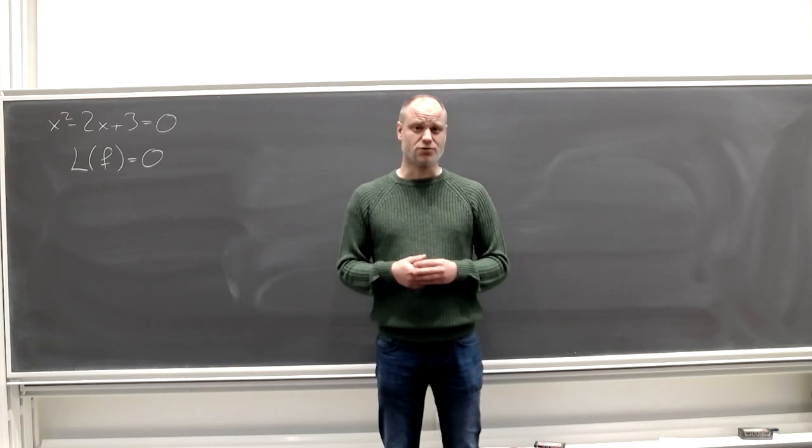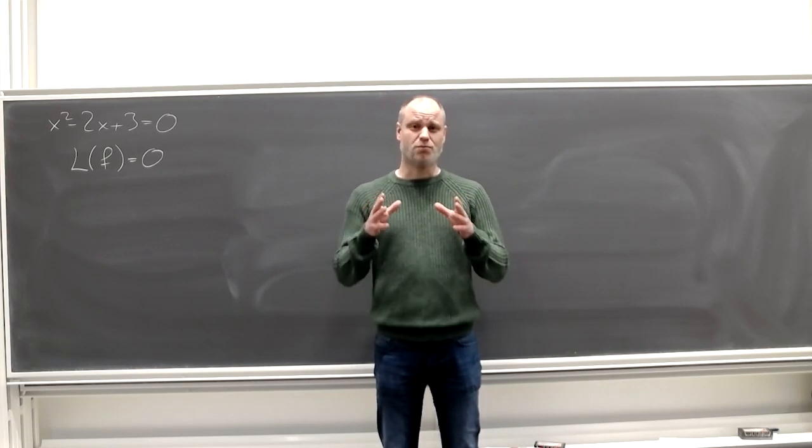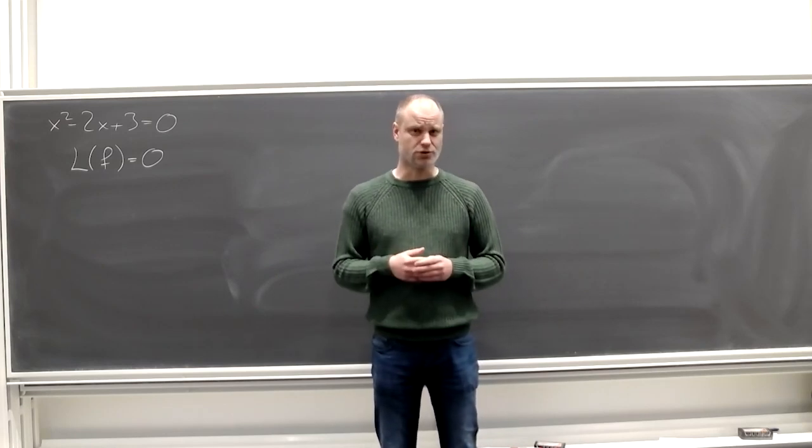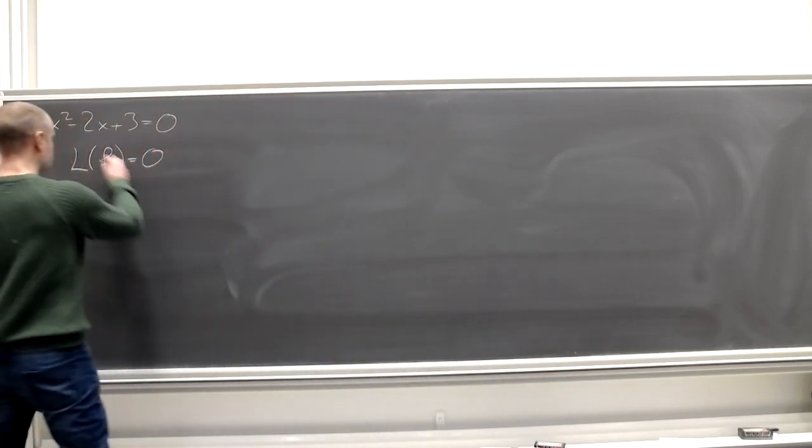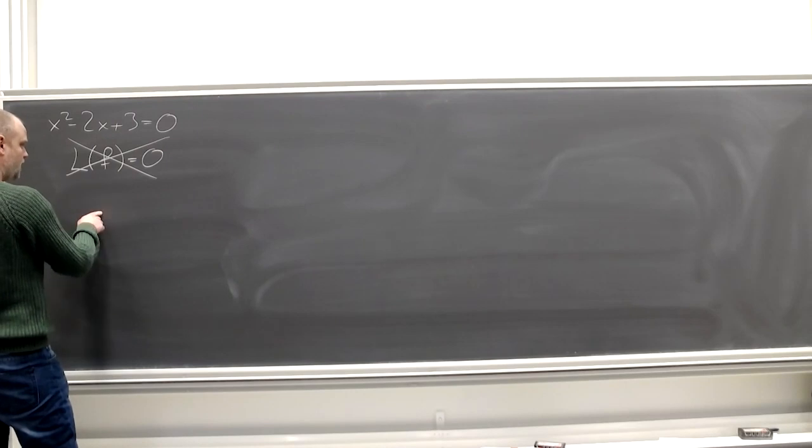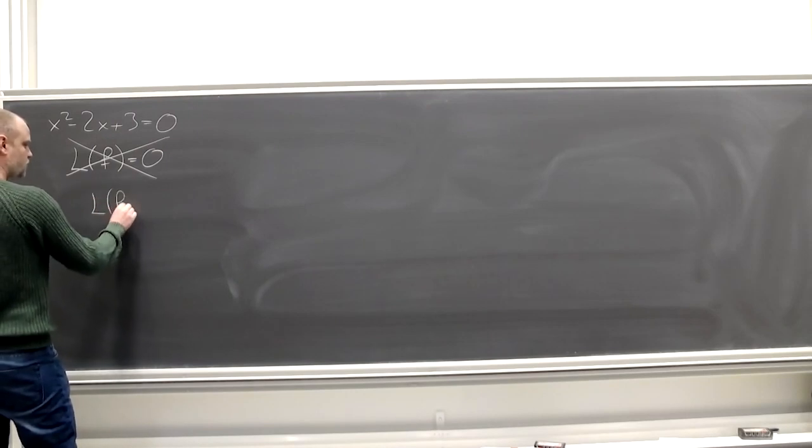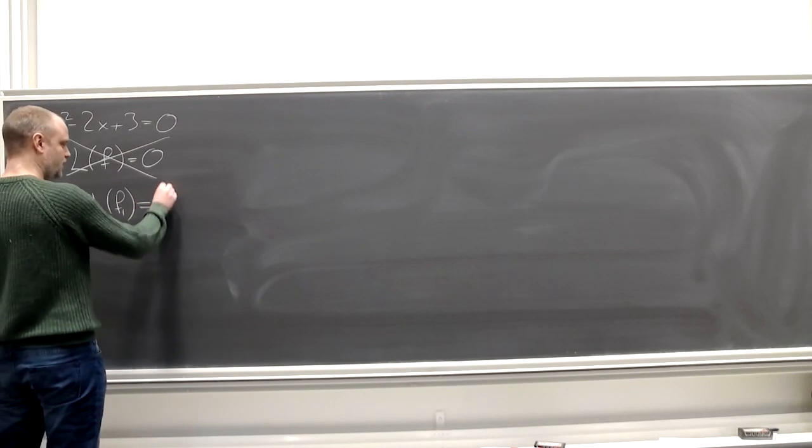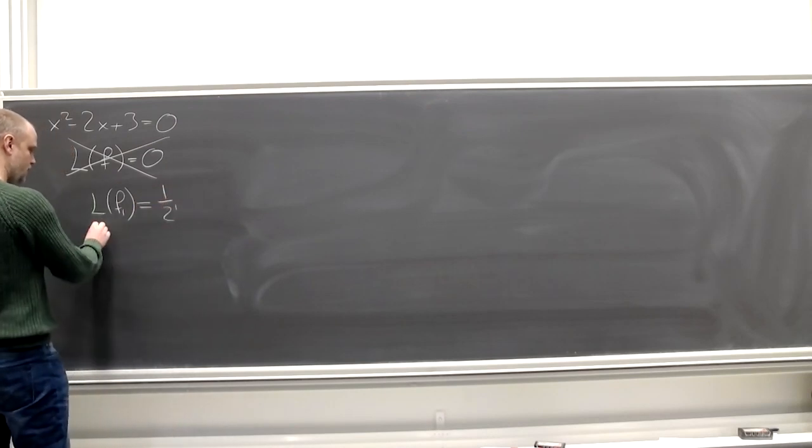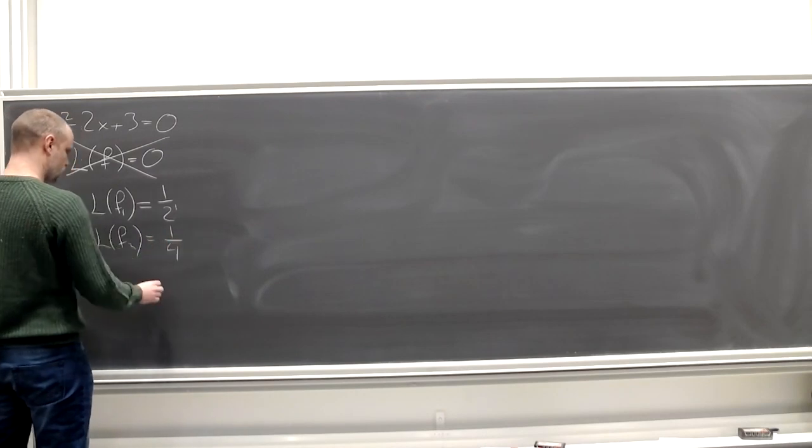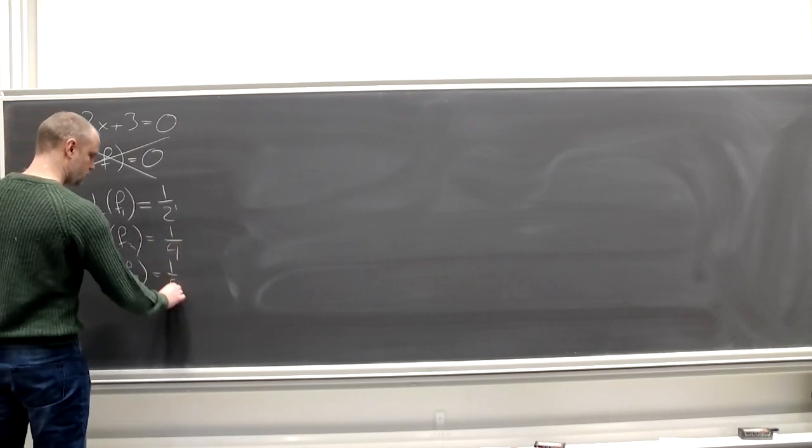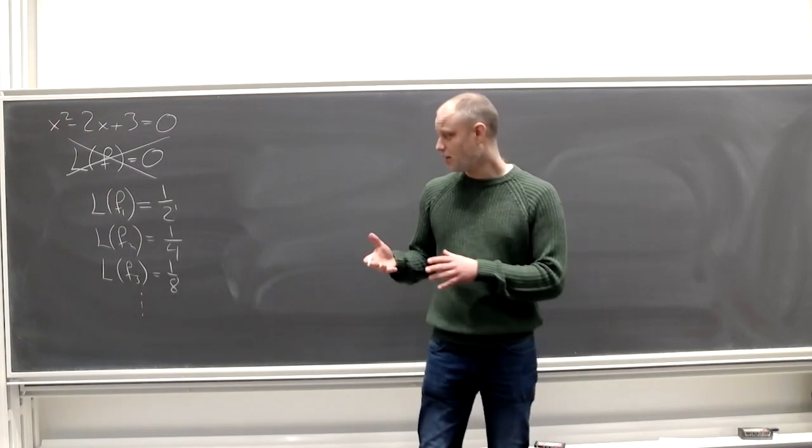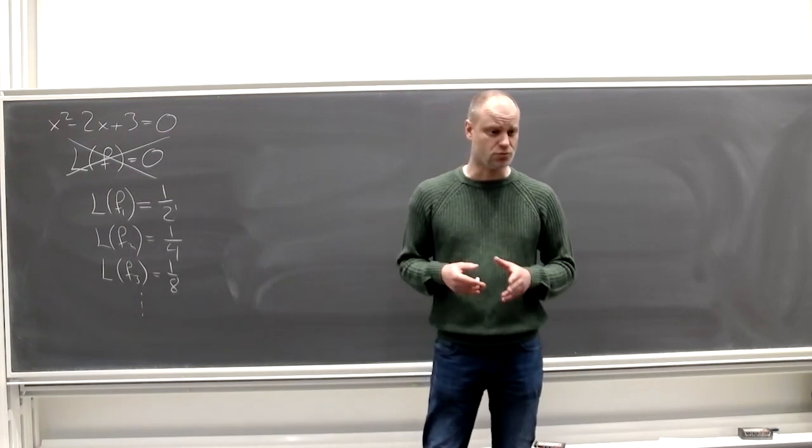These are functions we could be interested in. Usually we cannot solve the problem exactly, but we can do some approximative argument and come up with an approximate solution. We find f1 such that L(f1) equals some small number. Then f2, which is an even better solution. You get a sequence of functions that are better and better approximate solutions.